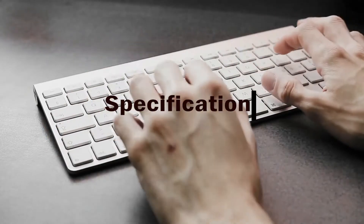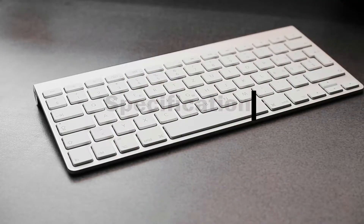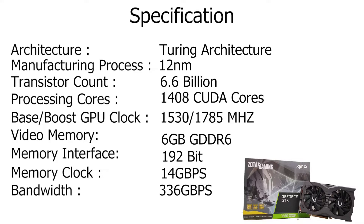Let's start with the specifications. This card comes on a Turing architecture with a 12nm manufacturing process. The transistor count is 6.6 billion and it has 1408 CUDA cores. The base/boost GPU clock is 1530/1785 MHz and it has 6 GB of GDDR6 video memory. The memory interface is 192-bit, the memory clock is 14 GB/s, and the bandwidth is 336 GB/s.